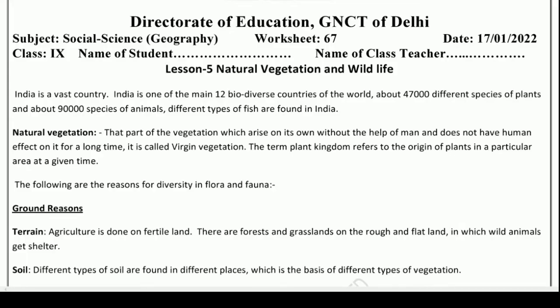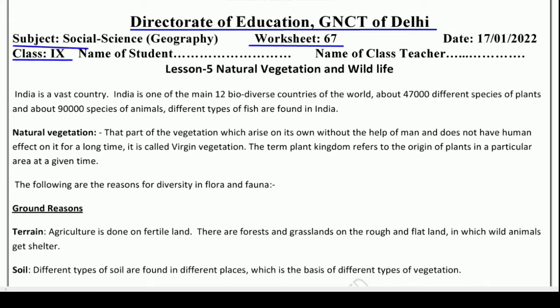Hello and welcome to Lavneesh Sarki class. This is Directorate of Education GNCT of Delhi's worksheet number 67, and it is only for Class 9 students. It is taken from the subject Social Science Geography, and we will learn and understand a new chapter — Lesson number 5, Natural Vegetation and Wildlife.